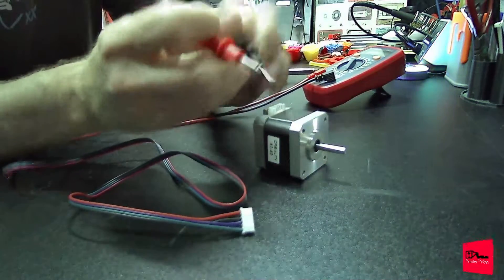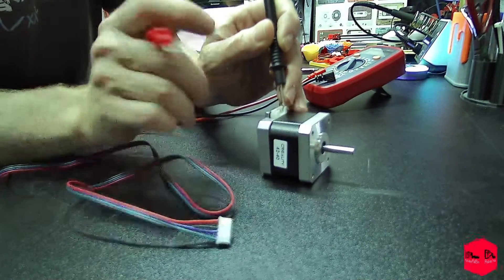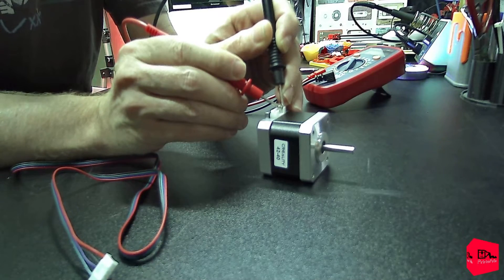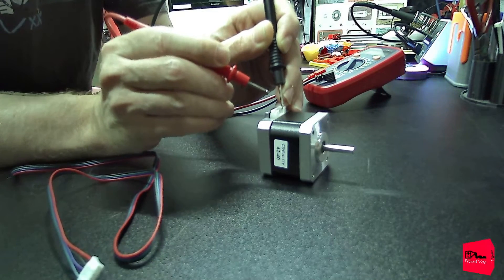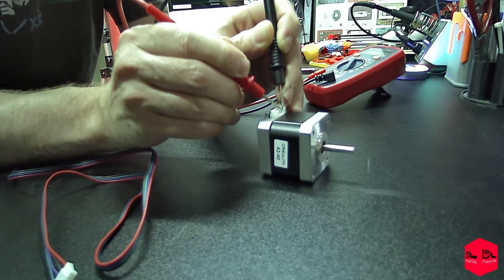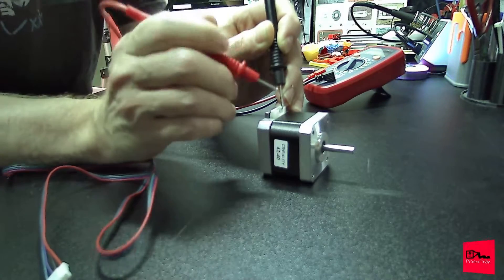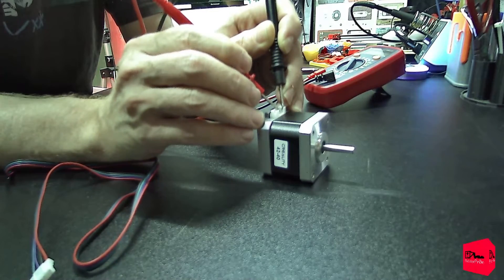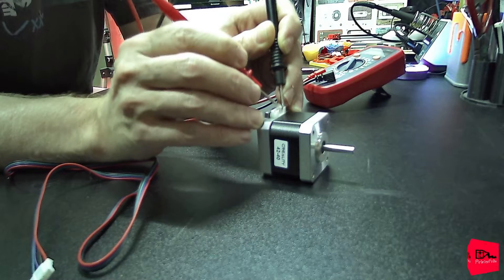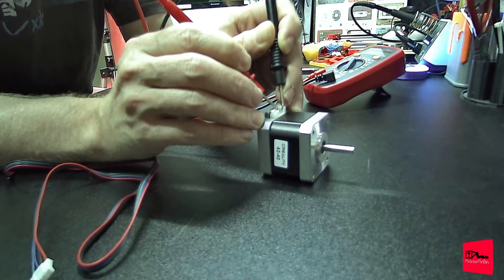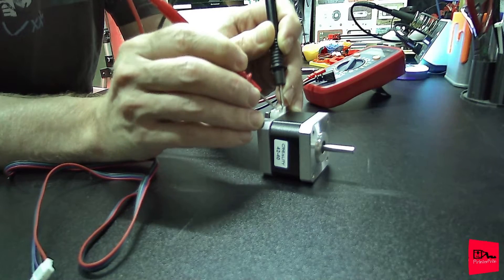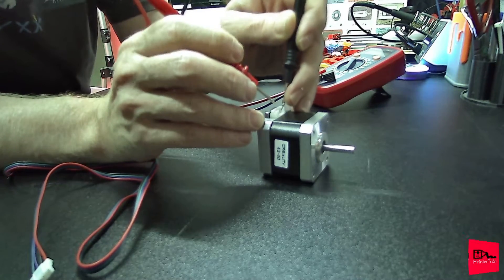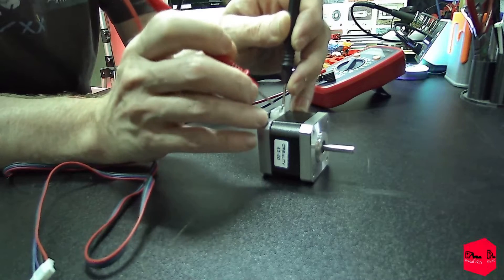So we will take our negative, stick it on the first pin, and we will go ahead and stick it on the second pin, and we get nothing on the multimeter as we should. So let's go to the next one, the third pin. Nothing. Fourth pin, nothing. Fifth pin, nothing. Sixth pin, nothing. Am I touching it? It's working.